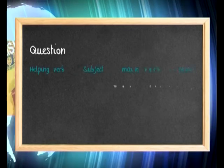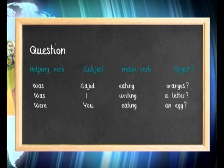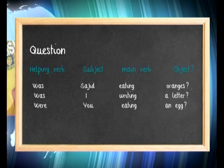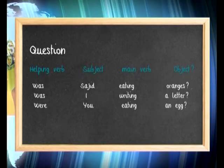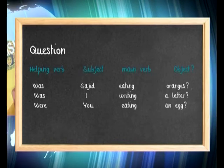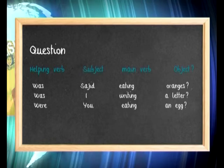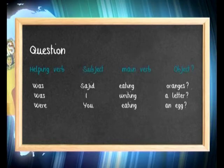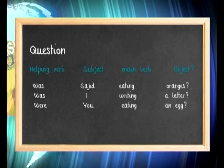In the interrogative form, the helping verb shifts to the beginning, then the subject, then the main verb in -ing form, and then the object if needed. The same sentence in positive was 'Sajid was eating oranges,' in negative 'Sajid was not eating oranges,' and in interrogative it becomes 'Was Sajid eating oranges?' A few more examples: 'Were you talking to me yesterday?' 'Were they bringing gifts for the parents?' 'Were you eating an egg?'